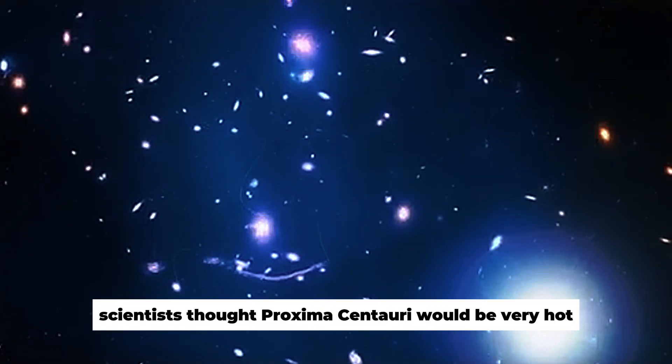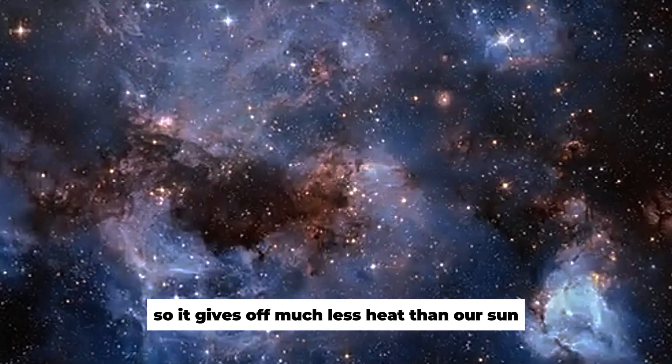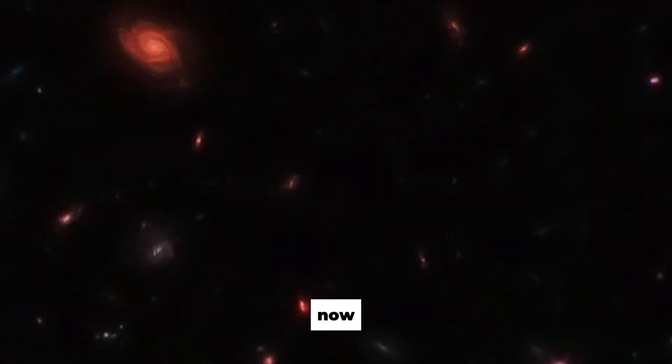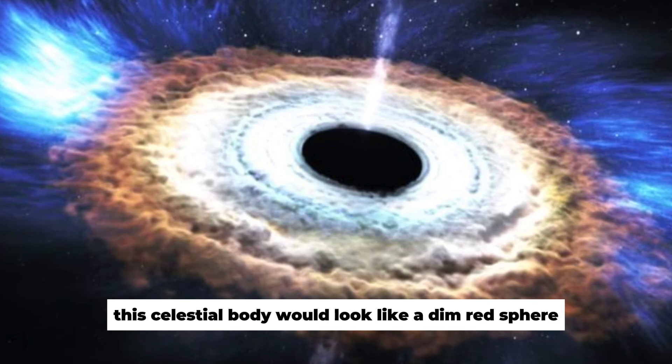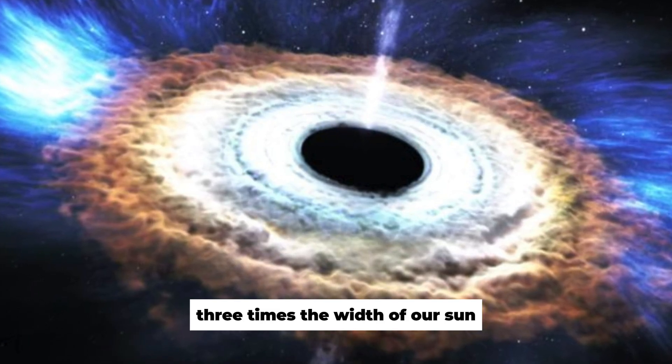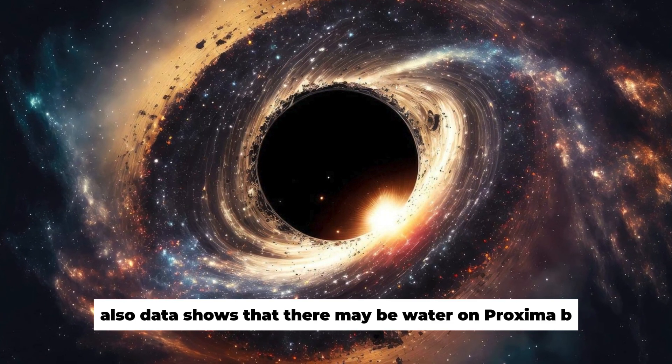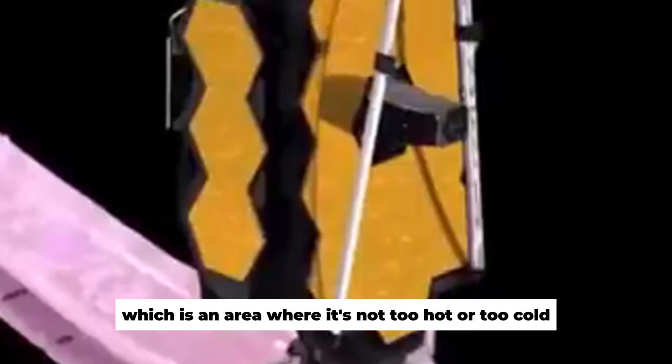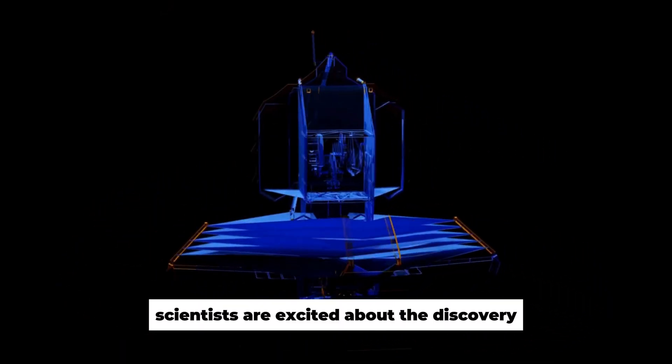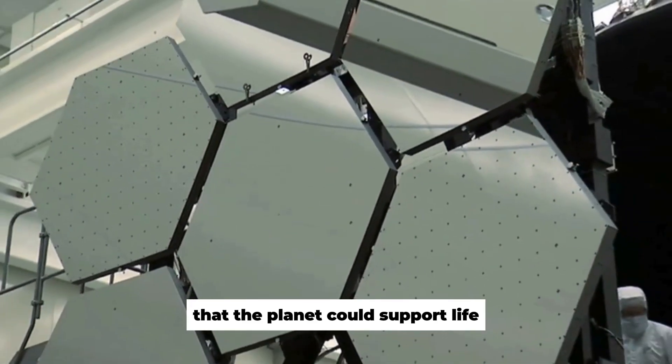Scientists thought Proxima Centauri would be very hot since it was so close. It is a small star though, so it gives off much less heat than our Sun. Picture yourself standing on the surface of Proxima b and looking up at Proxima Centauri. This celestial body would look like a dim red sphere three times the width of our Sun, not like our Sun's bright light. Data shows that there may be water on Proxima b if it is in the Goldilocks zone around its star, which is an area where it's not too hot or too cold. Scientists are excited about the discovery that Proxima b has water on it, because it could mean that the planet could support life.